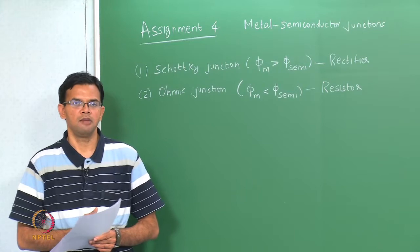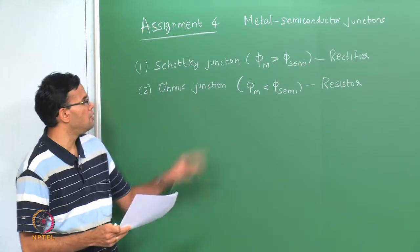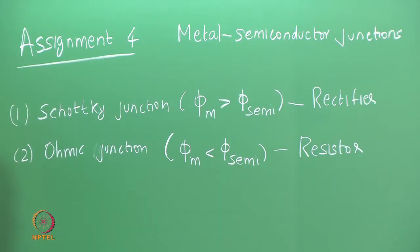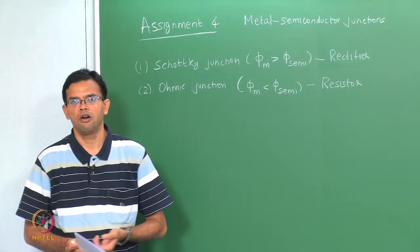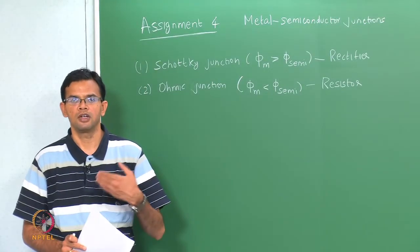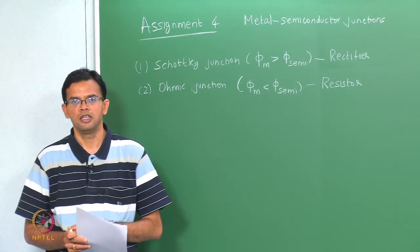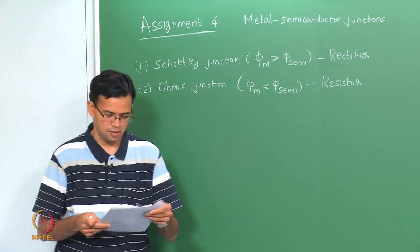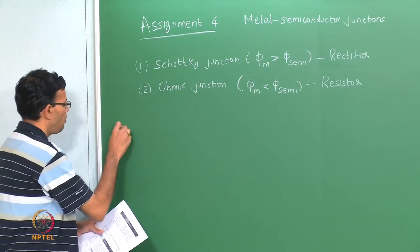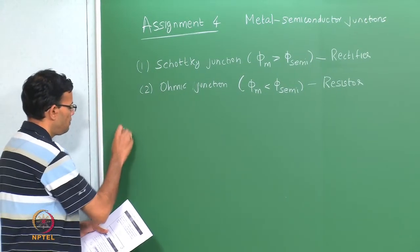In today's assignment, we will be looking mostly at Schottky junctions. We will do some calculations on the Schottky barrier, the contact potential, and also the current in the forward and reverse bias. Let us go to problem number 1.